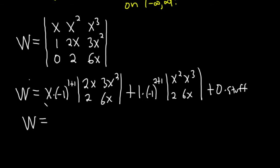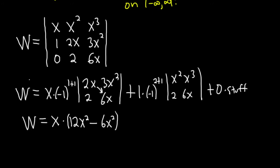So w, which is the Wronskian. Cleaning this up: the first cofactor is negative 1 squared, which is 1 since it's an even power. So we have x times the 2x2 determinant.